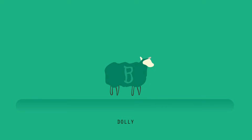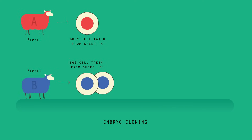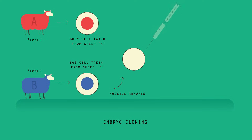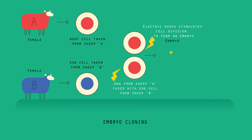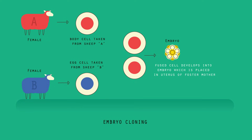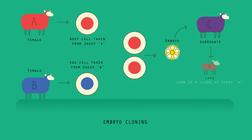Adult cell cloning is used to form a clone of an adult animal. You might have heard of Dolly the sheep — she was the first mammal to be cloned back in 1996. There are several steps to this process. An unfertilized egg cell is taken from an adult female, and the nucleus is removed. A body cell, such as a skin cell, is taken from a different adult. The nucleus is removed from this body cell and inserted into the egg cell. An electric shock stimulates the egg cell to divide to form an embryo. These embryo cells contain the same genetic information as the adult body cell. When the embryo has developed into a ball of cells, it is inserted into the womb of an adult female surrogate to continue its development. So three different adults are used. The baby born will be a clone of the adult that donated the body cell because it has the same DNA.